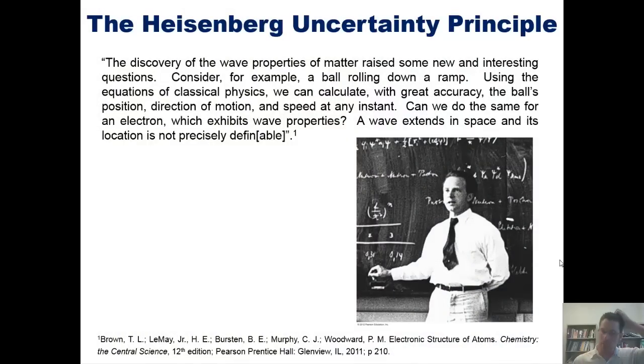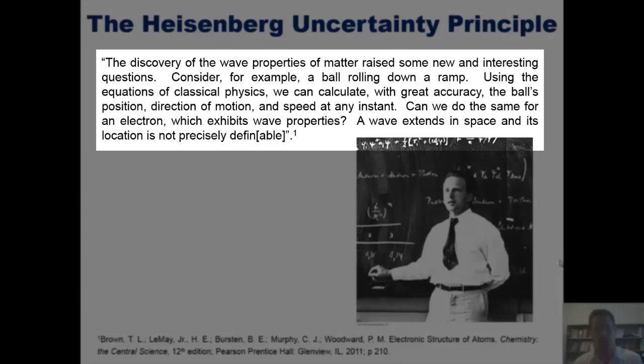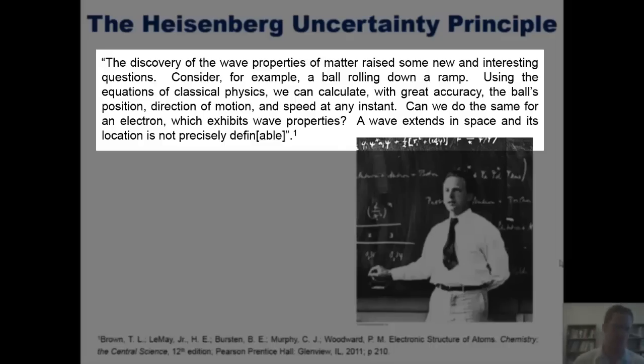I'm going to take this quote directly from our book because I really like it. It says, the discovery of the wave properties of matter, which we talked about in our previous lecture, raised some new and interesting questions. Consider, for example, a ball rolling down a ramp. Using the equations of classical physics, we can calculate with great accuracy the ball's position, direction of motion, and speed at any instant. Can we do the same for an electron, which exhibits much more significant wave properties? A wave extends in space and its location is not precisely definable.